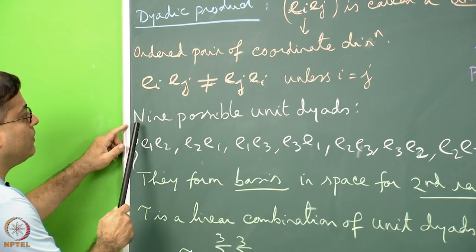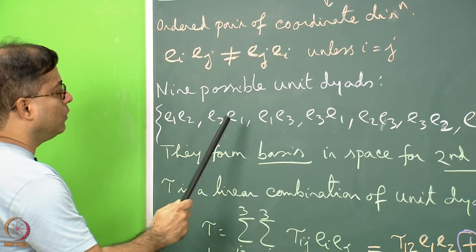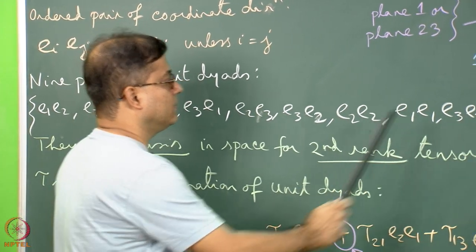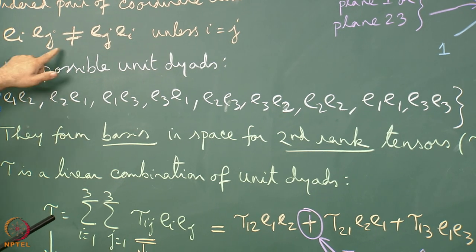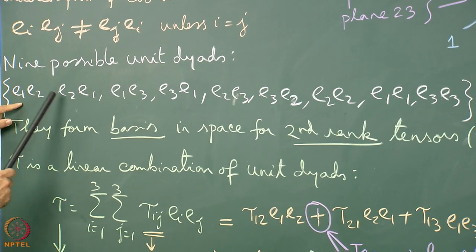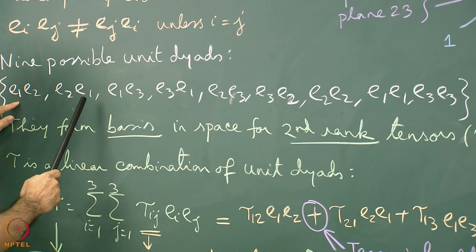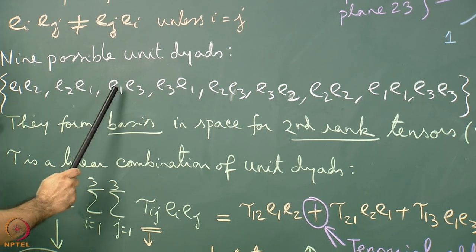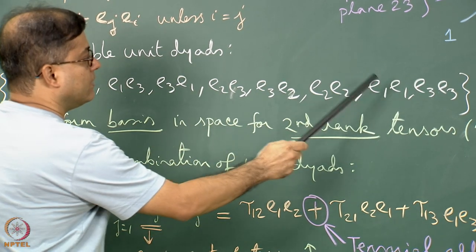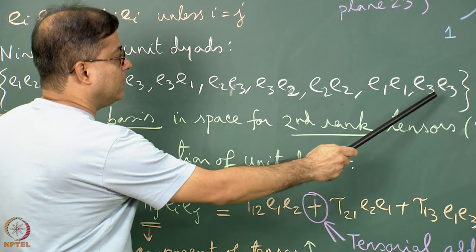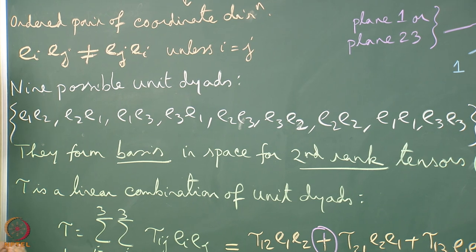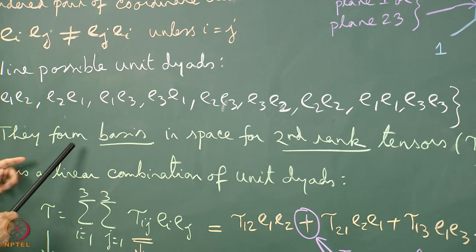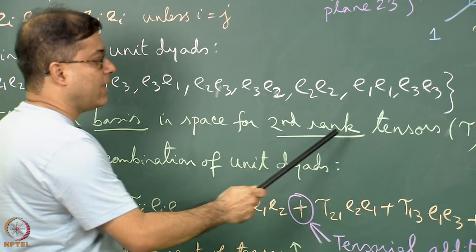In this way there can be 9 possible dyads: E1E2, E2E1, E1E3, E3E1, E2E3, E3E2, E2E2, E3E3, and E1E1. Since EI,EJ is not equal to EJ,EI, E1E2 and E2E1 are written as separate elements. So in this set of unit dyads we have 9 elements. E2E2, E1E1, and E3E3 are examples when I equals J. These 9 elements constitute a basis in space for the second rank tensors.